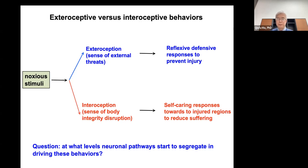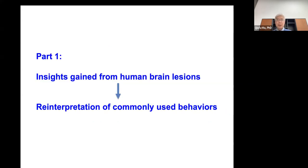The question is: at what level within the somatosensory system can we start to see the segregation driving these two sets of behaviors? Here I will look at the organization of the somatosensory system in driving those two sets of behavior, starting with some insights we gained from human studies, particularly human brain lesion studies. Using those lesion studies, we will make analogous interpretations in animal studies to reinterpret the significance of various behaviors.